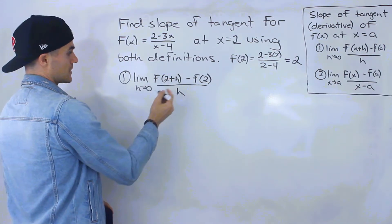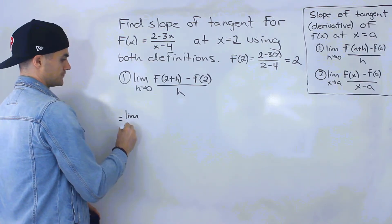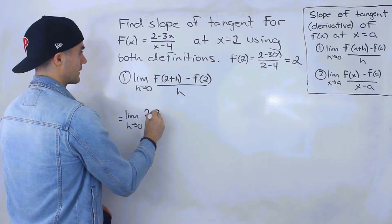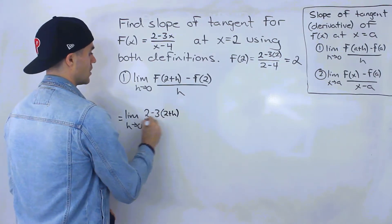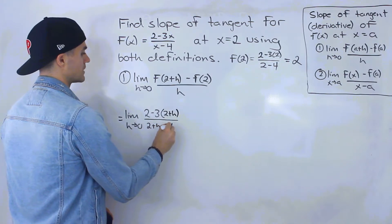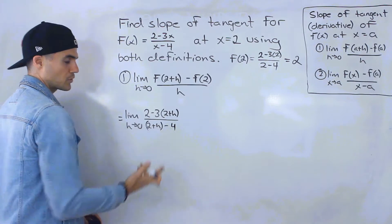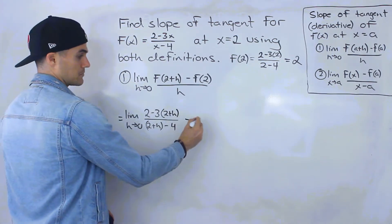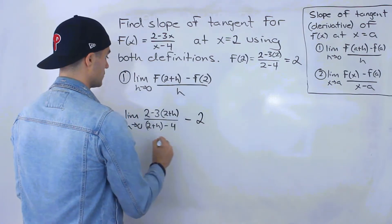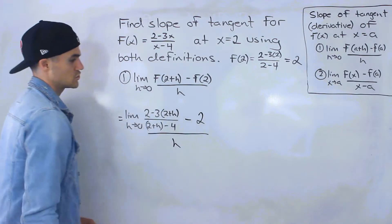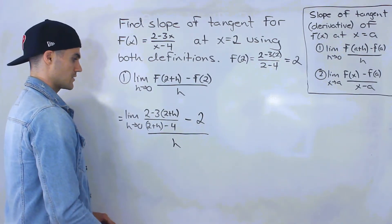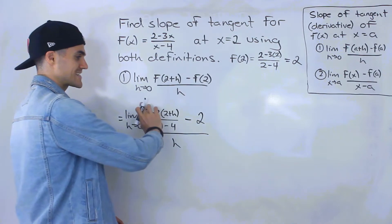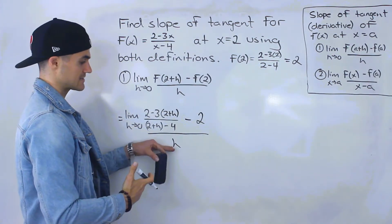So f(2) equals 2. Now what is f(2 + h)? We plug in 2 + h for the x values in both the numerator and the denominator, giving us: 2 minus 3(2 + h), all over 2 + h minus 4. Then we subtract f(2) which is 2, and this is all over h. Notice we can't plug in 0 for h yet because h is in the denominator, so we need to simplify the numerator and try to cancel that h.